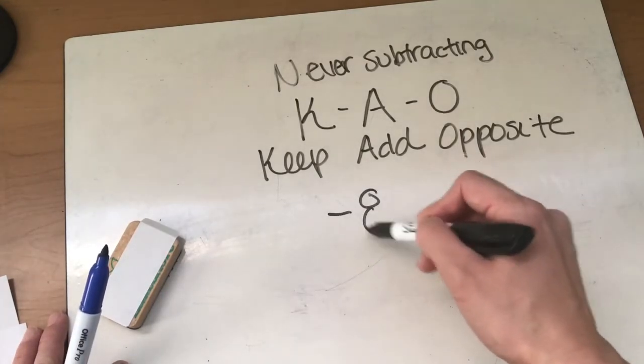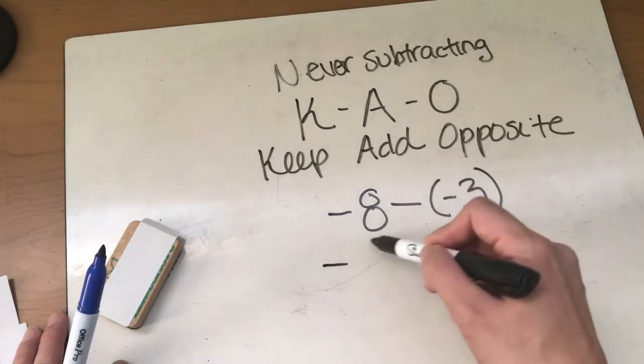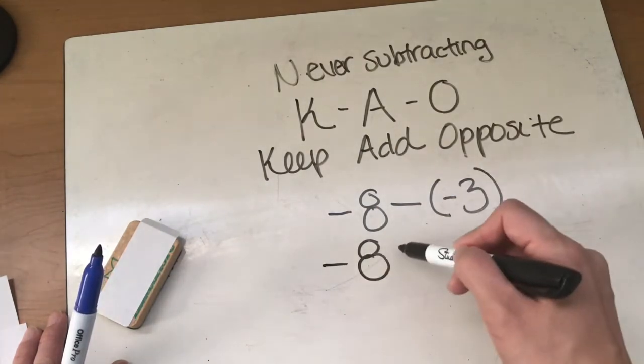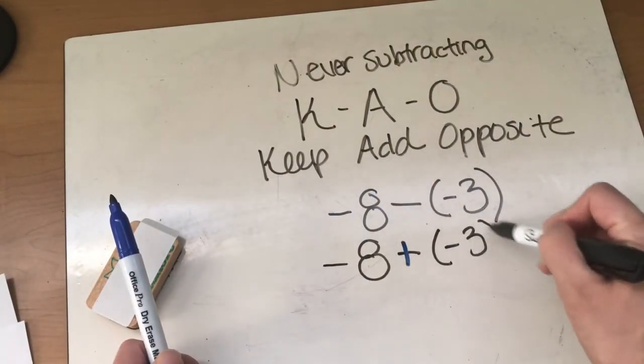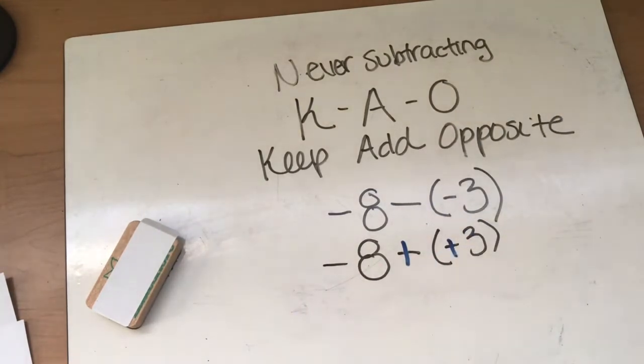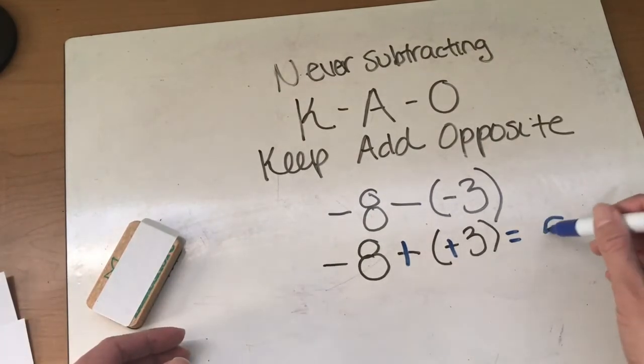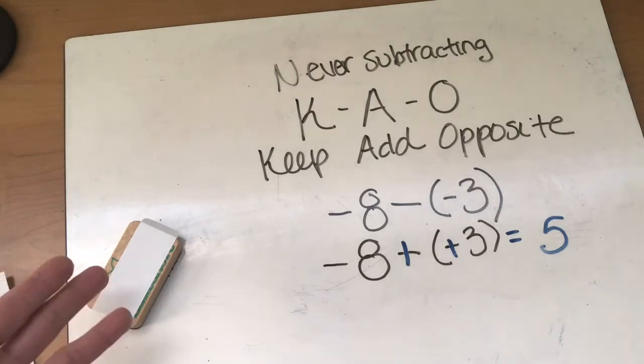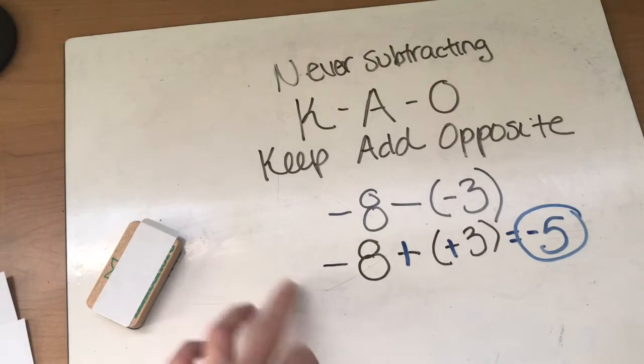And we will continue to do so many more examples. Let's see if I have negative 8 minus negative 3. Okay, so my negative 8 is going to, I'm going to keep it. My subtraction sign is going to change to an add and my negative 3 is going to change to an opposite which is positive 3. So now, again, what are my signs? Are they same sign or different? Different, what's the rule? Different signs subtract. So I have a 5 and take the sign of the greater absolute value which is 8. 8 is negative. So my answer is negative 5.